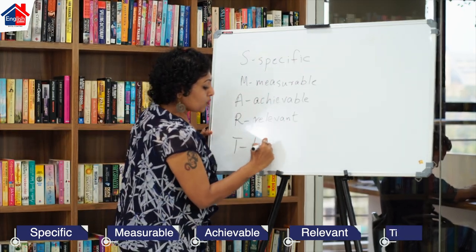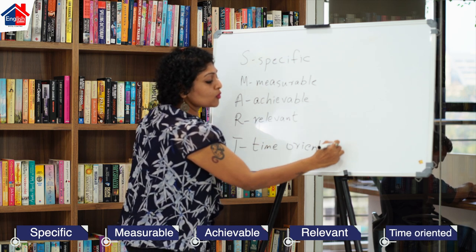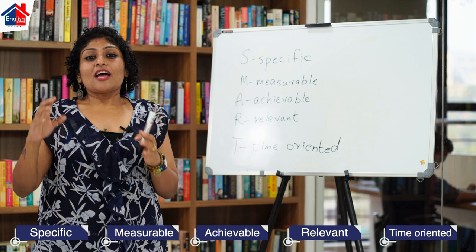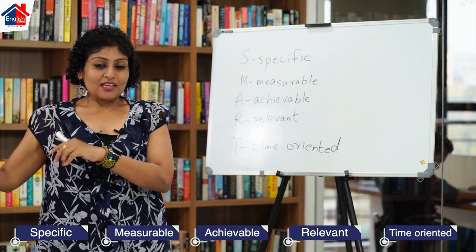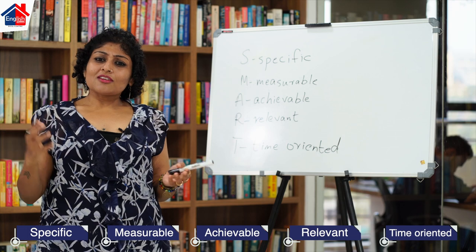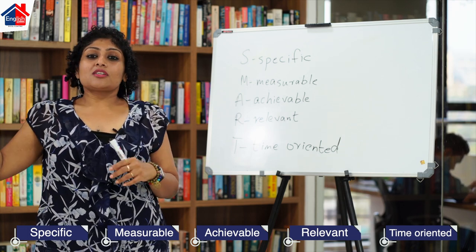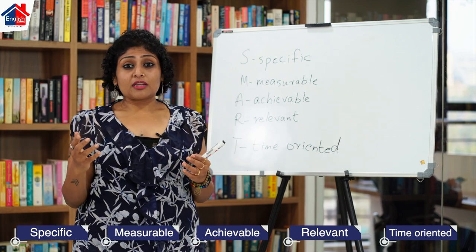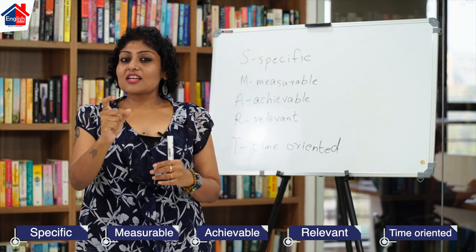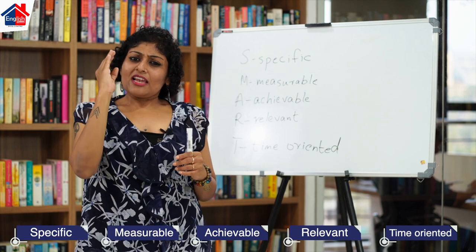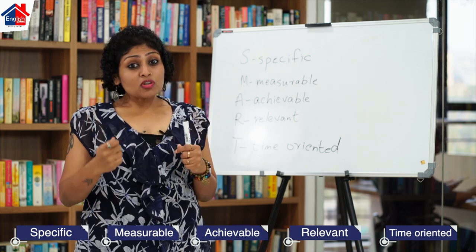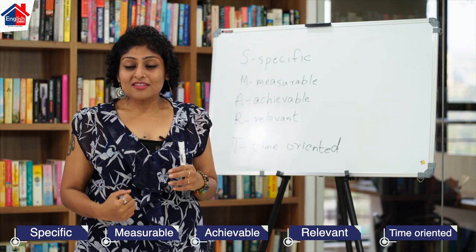T stands for Time-oriented. Any goal you set will have a time gap. For example, I want to be rich by April 2021 — which means you are giving a specific command to your brain about exactly when you want to achieve your goal. Always when you put a goal, make sure you have a specific time: your month, your date, your year — everything is set. Because if you want to achieve a goal, you will make sure you use everything in your power to achieve it.